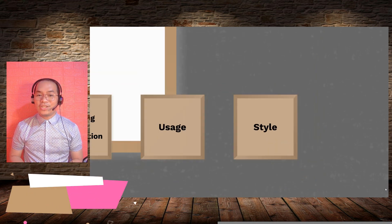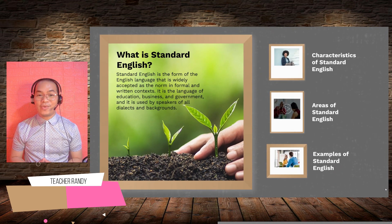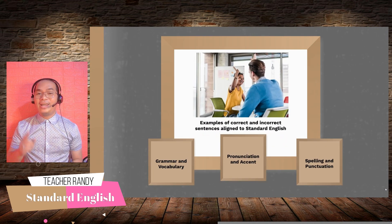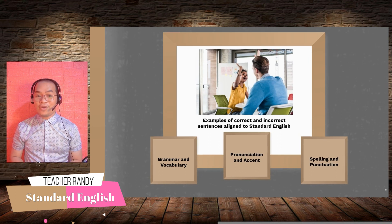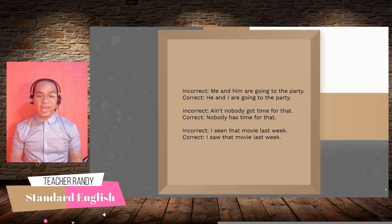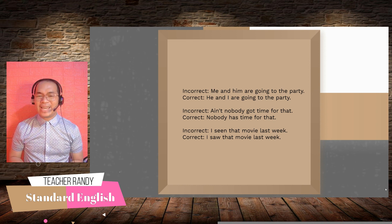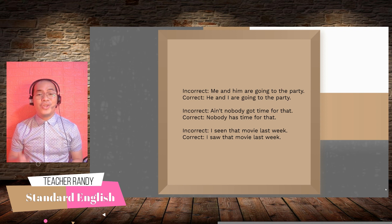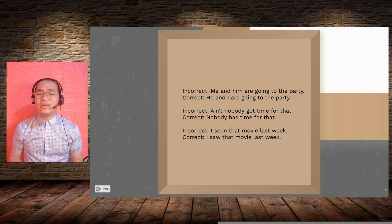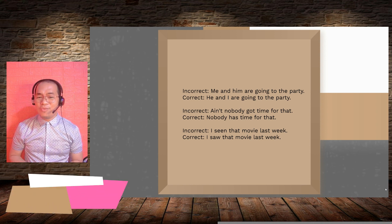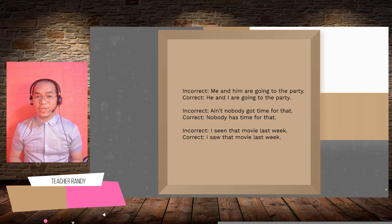Now let's look at some examples of correct and incorrect sentences aligned to Standard English — grammar and vocabulary. We sometimes say 'Me and him are going to the party,' but instead we say 'He and I are going to the party.' In Standard English, we don't say 'Ain't nobody got time for that'; instead, we say 'Nobody has time for that.' We sometimes say 'I seen that movie last week,' but in Standard English, we say 'I saw that movie last week.'